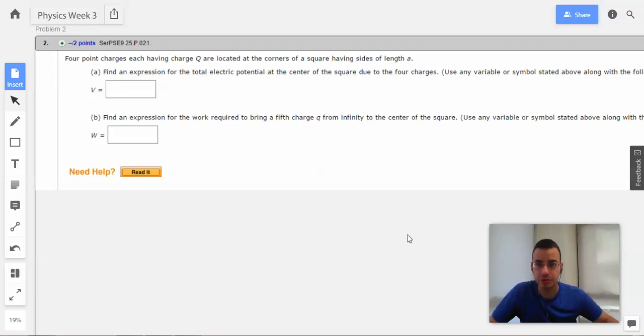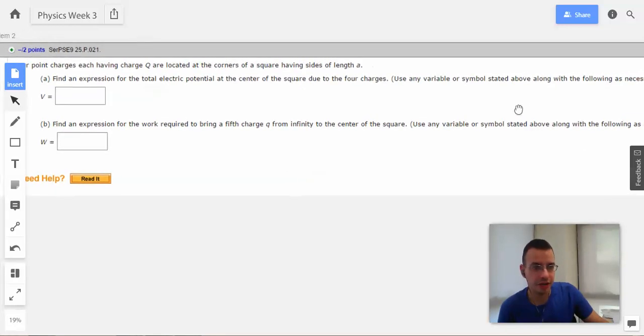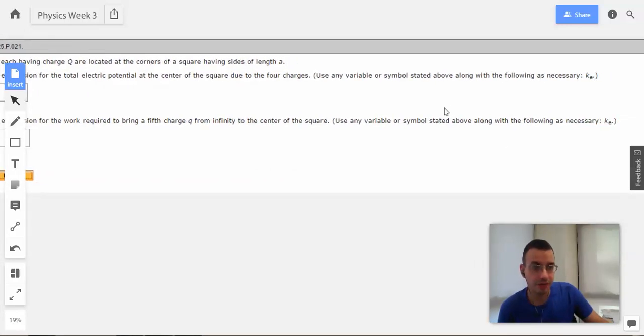We'll work three, problem two. Four point charges, each have a charge Q, are located at the corners of a square having sides of length A. Find an expression for the total electric potential at the center of the square due to the four charges. Use any variable or symbol stated above, along with the following as necessary.